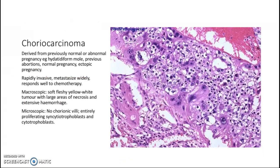In choriocarcinoma, it's derived from a previously normal or abnormal pregnancy. The abnormal pregnancy highlighted includes mole, previous abortions, and it can be derived from normal pregnancy as well, and also ectopic pregnancy. It's rapidly invasive and it can metastasize widely, but it responds well to chemotherapy. Grossly, it can present as a soft, fleshy, yellow-white tumor with large areas of necrosis and extensive hemorrhage.